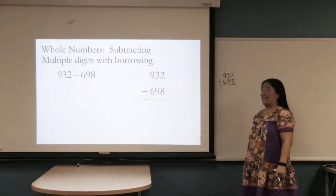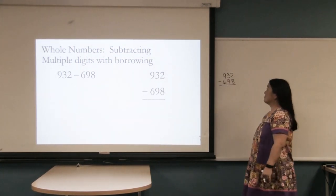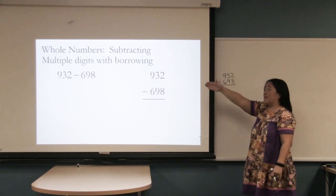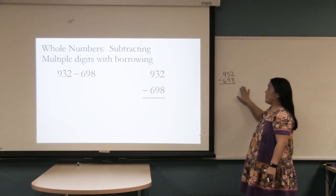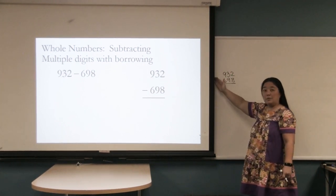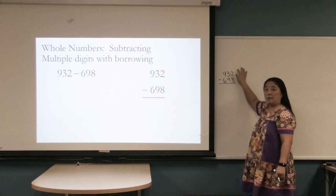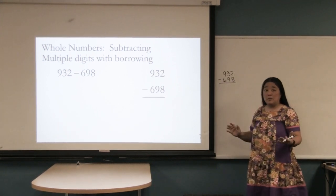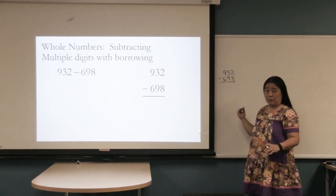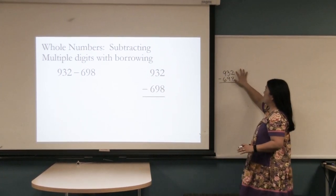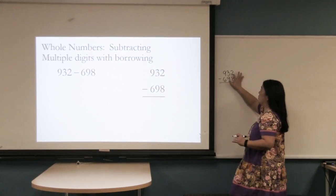Whole numbers subtracting multiple digits with borrowing. Again we have it written left to right, top to bottom, and here on the board. We start from the right and we head toward the left, but if you look here you can't take eight away from two. Many students will incorrectly subtract going upwards, but you have to come downwards. So here two is not big enough to subtract eight, so we'll have to borrow.